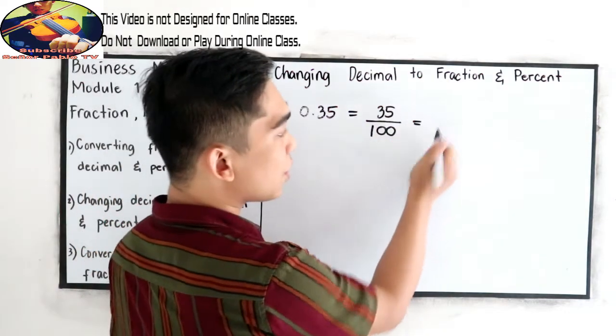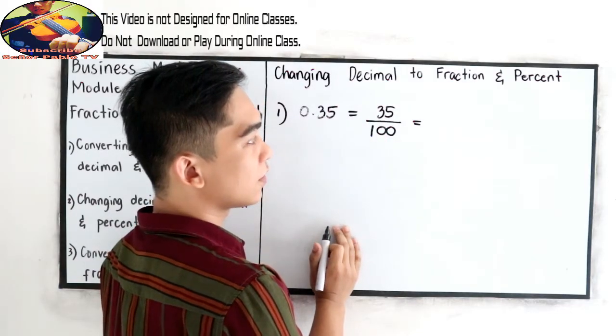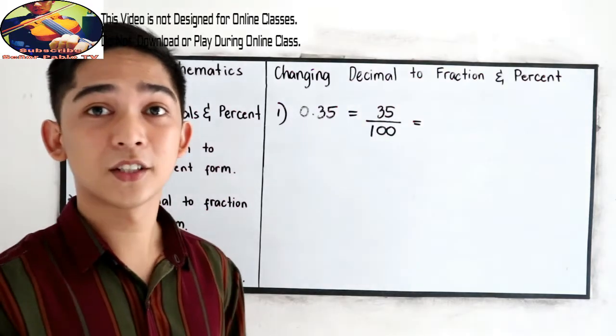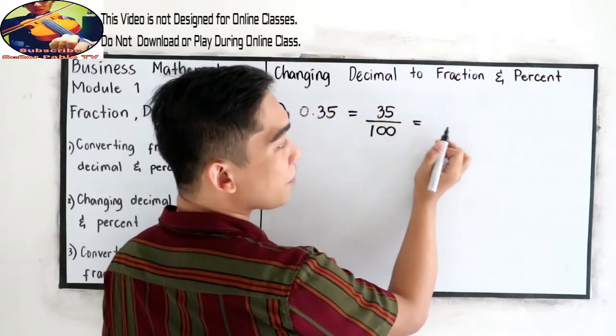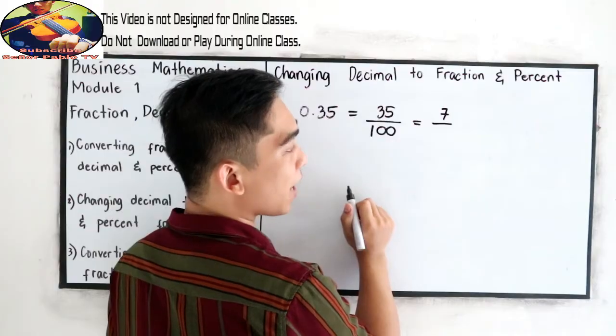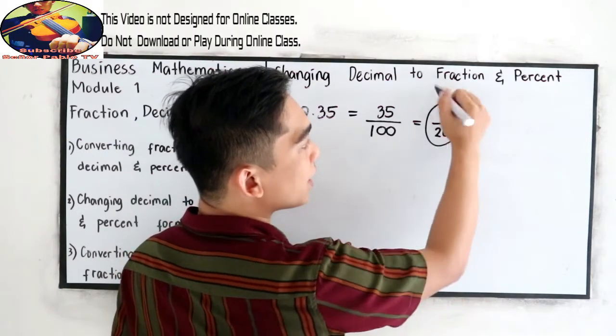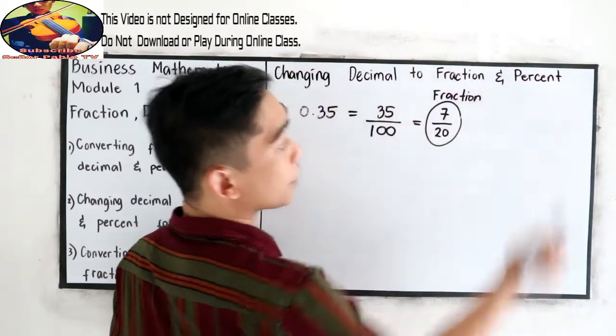Now, reduce into lowest term, divisible by 5. So 35 divided by 5, we have 7 over 100 divided by 5, we have 20. This will be our fraction form, 7 over 20.